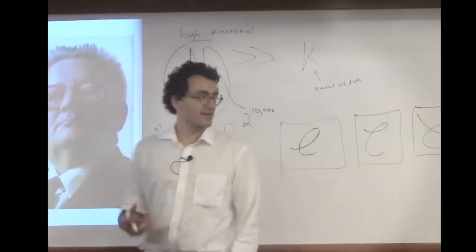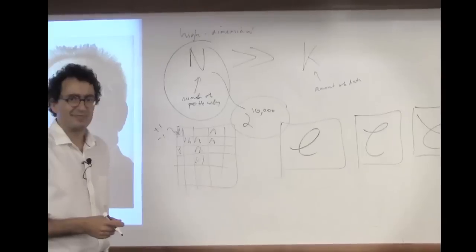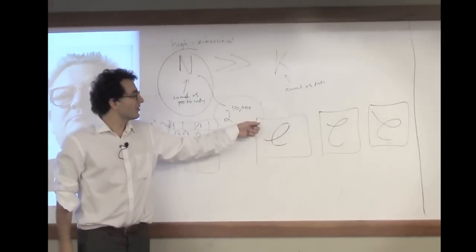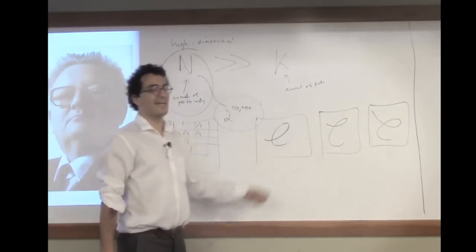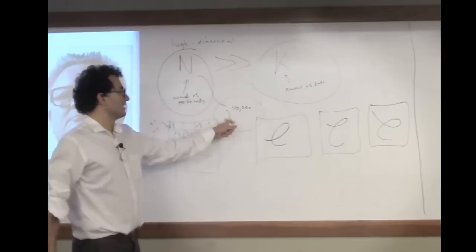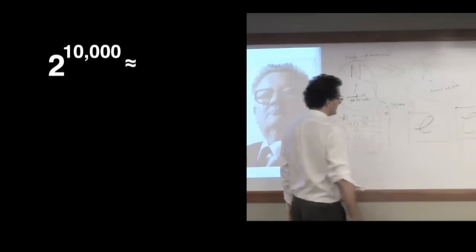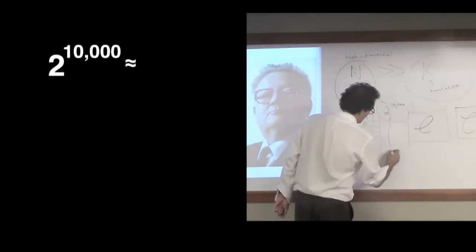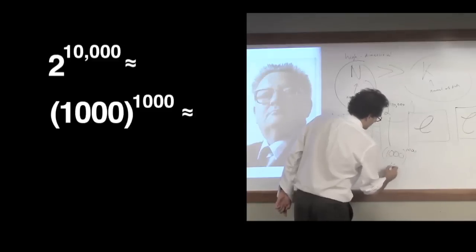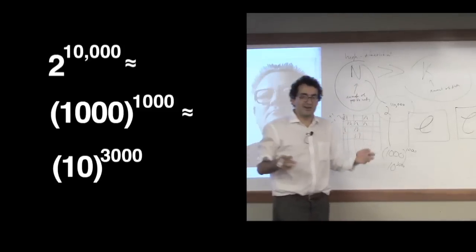There's almost no way that you're going to acquire, in fact, it's probably possible to prove that the universe will die a fearsome heat death before you're able to gather enough samples of my handwriting so that the amount of data you have k is in any way comparable to 2 to the 10,000. Just to give you a sense, 2 to the 10,000 is sort of like 1,000 to the 1,000, 10 to the 3,000. So that's like a googol to the power of 30.